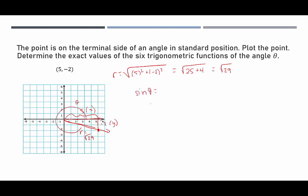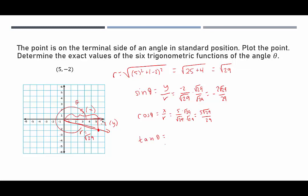Sine of theta is y over r = -2 over √29. We rationalize by multiplying by √29 over √29, giving -2√29 over 29. Cosine of theta is x over r = 5 over √29. Rationalizing gives 5√29 over 29. Tangent of theta is y over x = -2 over 5. No rationalization needed.